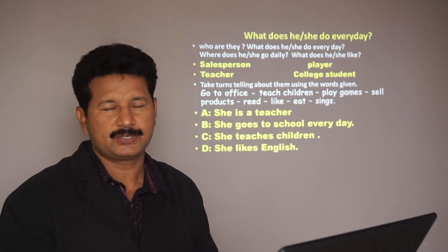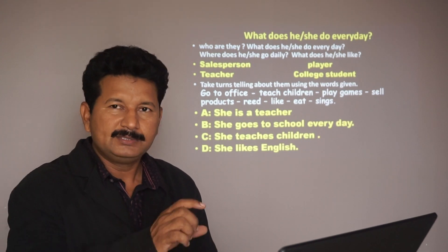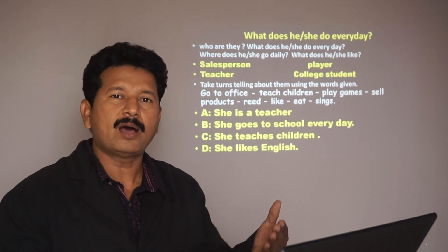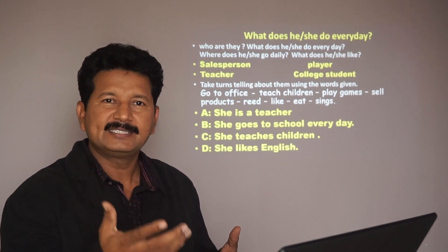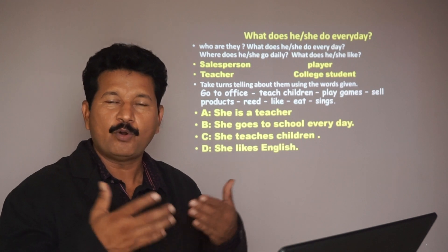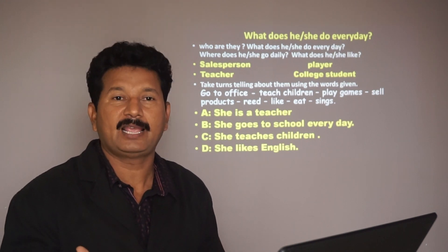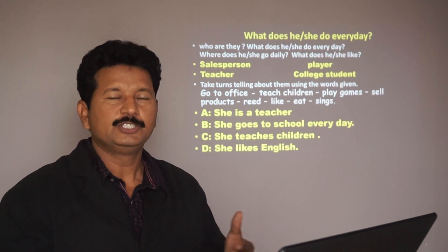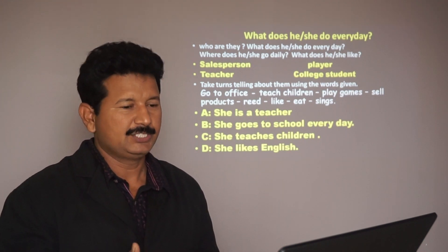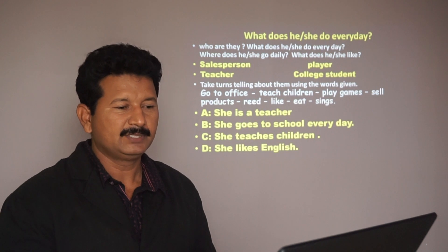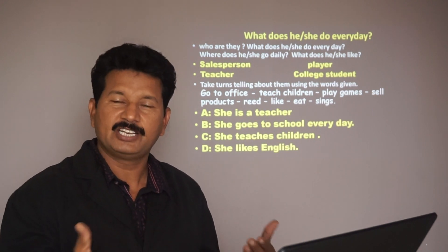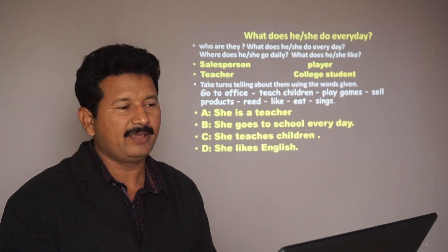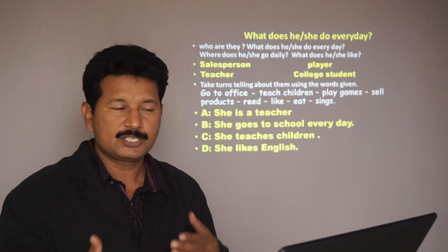Now there is one more task. There are different kinds of people: a salesperson, a teacher, a player, and a college student. Look at the words and try to find out who they are, where they go, what they do, and what they like. For example: she is a teacher, she goes to school every day, she teaches children, and she likes English very much.